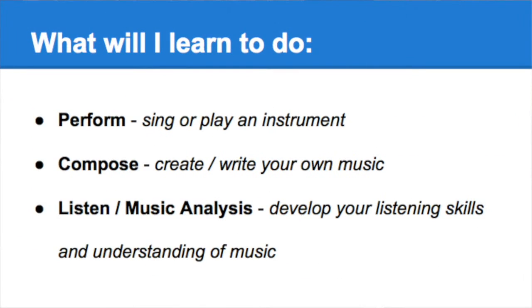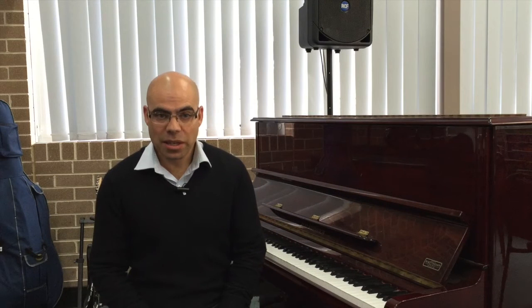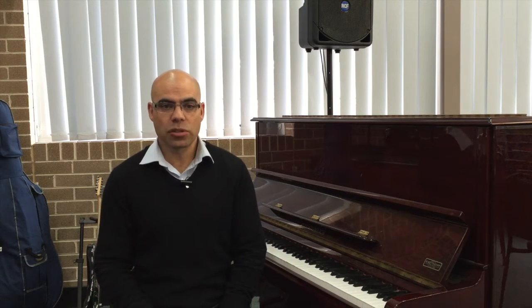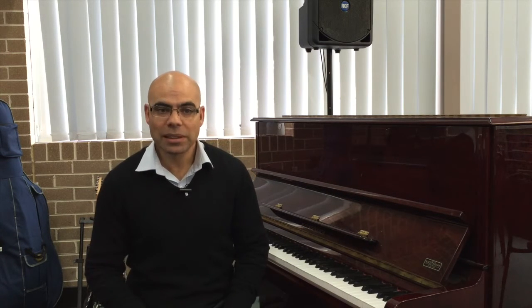Performing is where you learn to sing or perform an instrument of your choice. One of the main differences between Year 7 and 8 music and elective music is that you get to choose the instrument or instruments that you would like to learn. This includes singing and it also means that you can learn more than one instrument.